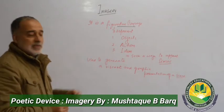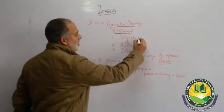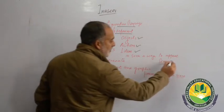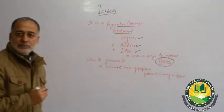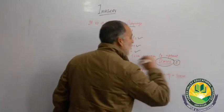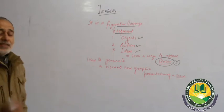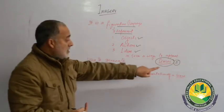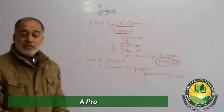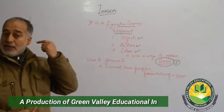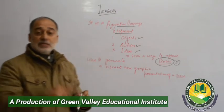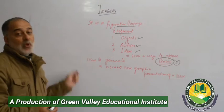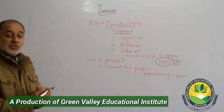Imagery is a figurative language used to represent either an object, action, or idea in such a way that it appeals to our senses. We have five senses, and anything that appeals to them creates an image — whether it appeals to the eye, ears, nose, mouth, skin, or our internal sensations. Keeping this in mind, we have broadly divided imagery into five classes.